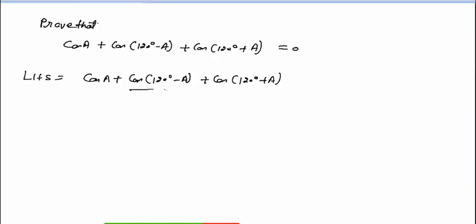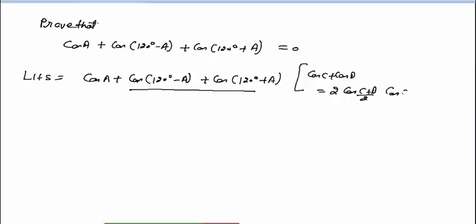सबसे पहले मैं इन दोनों के उपर CD formula लगाऊंगा। और आपको पता है, cos C plus cos D will be equal to 2 cos (C plus D)/2, times cos (C minus D)/2.